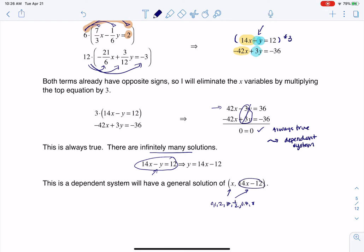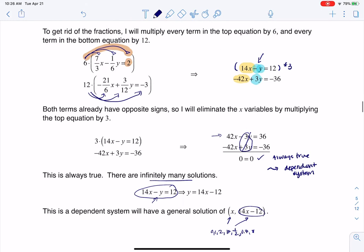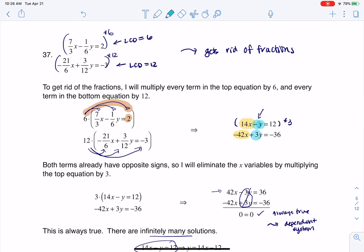And then I'll get my Y value based on 14 times that number minus 12. And when I plug that into my original system of equations, I will get a solution. And there are infinitely many of them because I can pick any X value I want.